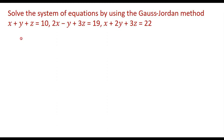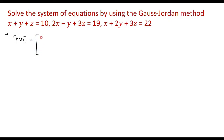Hello students. In this video, we will discuss the solution of a system of equations by the Gauss-Jordan method. In the Gauss-Jordan method, we reduce the augmented matrix to the diagonal matrix. Given a system of equations, we write the augmented matrix as A|D, where A is the coefficients matrix.